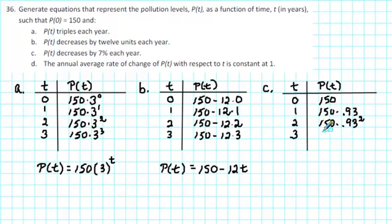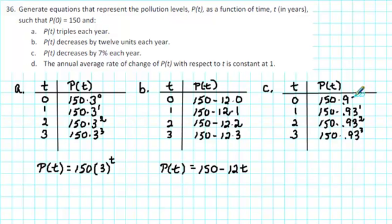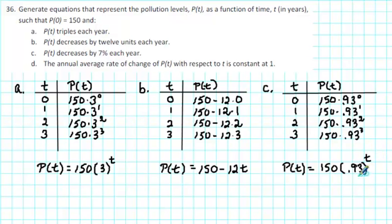After three years the pollution level will be 150 times 0.93 raised to the third power. This is very similar to part a: we have the initial amount 150 times a decay factor raised to a power, and the power matches the value of t. For t equals 0 we write 150 times 0.93 to the 0. So our formula is p of t equals 150 times 0.93 raised to the t. In this case we have exponential decay; the initial amount is 150 and the decay factor is 0.93, or 93%.